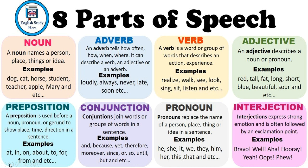A preposition is used before a noun or pronoun. It shows the position of the noun or pronoun. For example: at, in, on, about, to, for, from. You can say: the cat is sitting over the chair. The book is on the table. These are examples of prepositions.